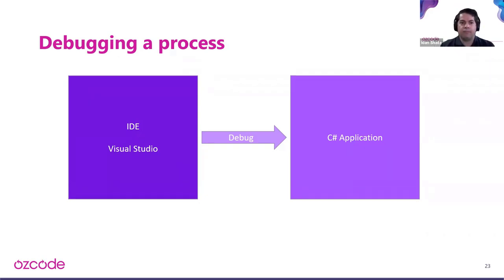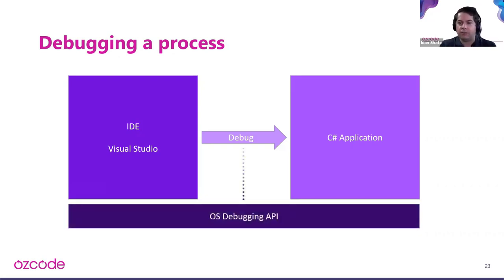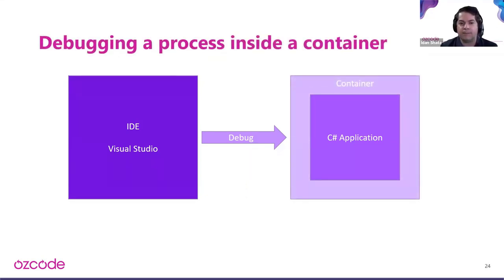When we talk about debugging, the IDE communicates with the application using the OS debugging API, which lets you inspect, freeze, add breakpoints, and read memory. However with Docker, the application is no longer on the same OS — it's on the same computer but not the same OS — so there is a gap we need to bridge.